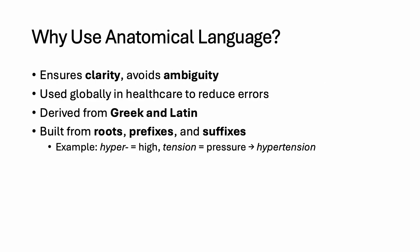Anatomical terminology isn't meant to confuse — it's here to help us be precise. A term like 'above the wrist' could mean several things, but 'anterior to the carpal region' is exact. These terms are built from ancient Greek and Latin, so their meanings don't change, and they help avoid miscommunication in clinical and academic settings. They're used globally in healthcare to reduce error, and they're built from roots, prefixes, and suffixes. For example, 'hyper' means high or above, and 'tension' means pressure — so hypertension means high blood pressure.